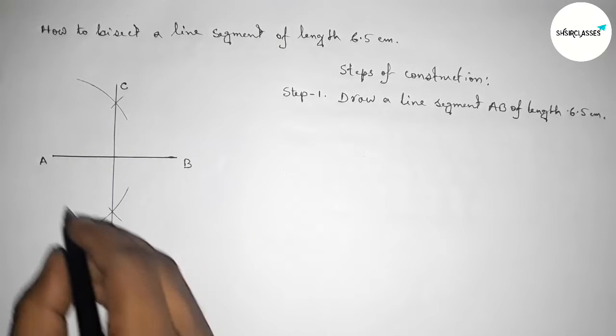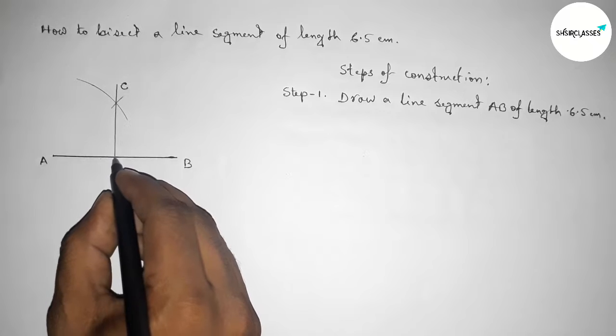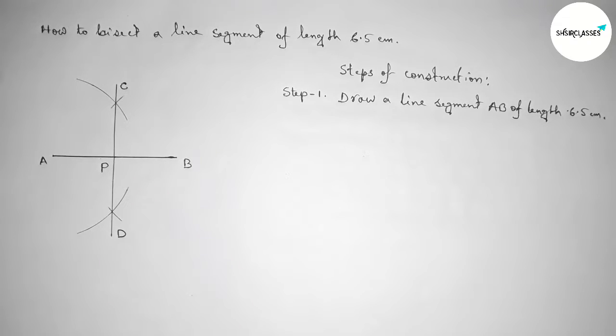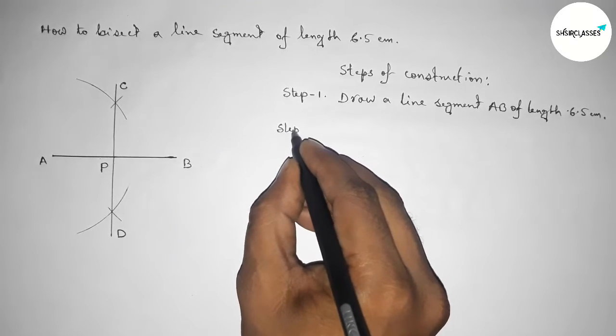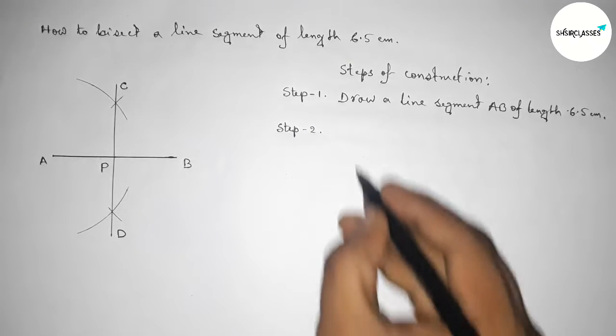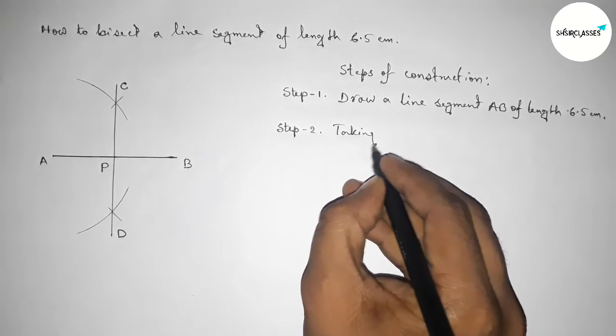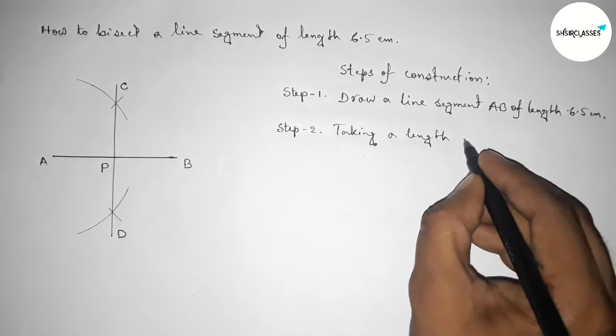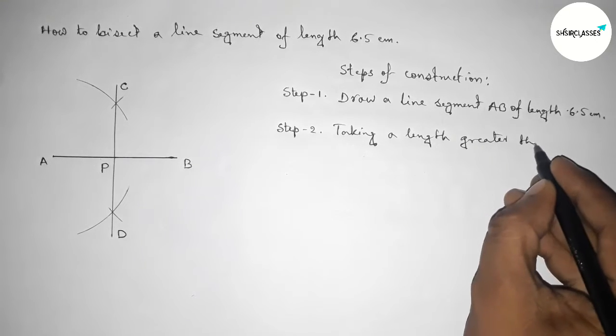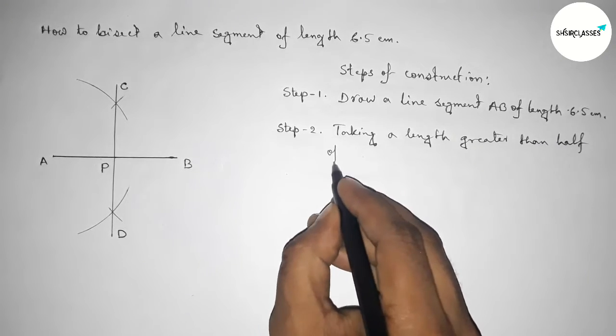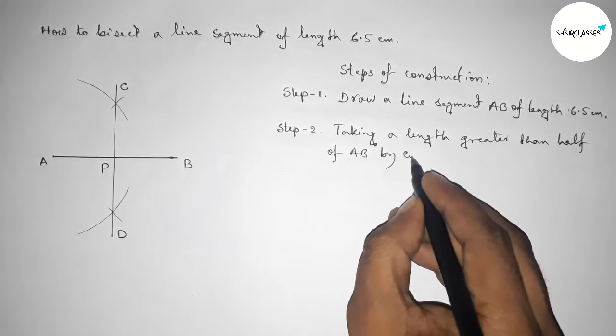So the line CD bisects the line AB here at point P. Step number two: First, taking a length greater than half of AB by using compass.